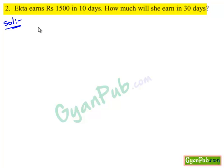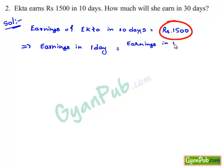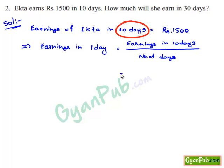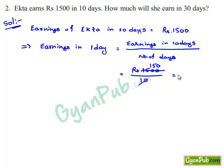Let's do the solution. Given that earnings of Ekta in 10 days is equal to Rs. 1500. This implies earnings in 1 day is nothing but earnings in 10 days divided by number of days, which is Rs. 1500 divided by 10. This gives earnings in 1 day as Rs. 150.